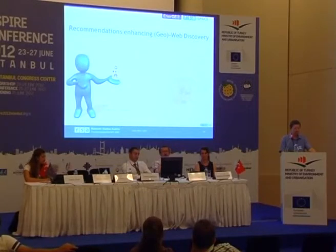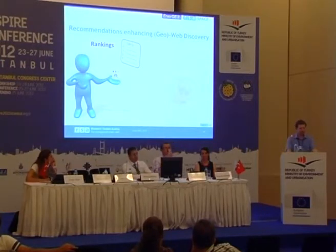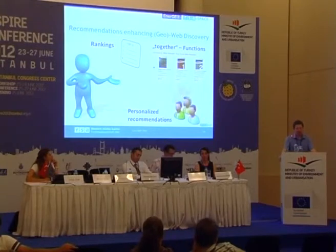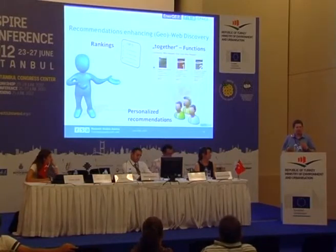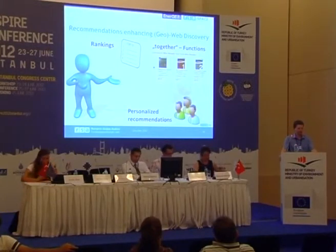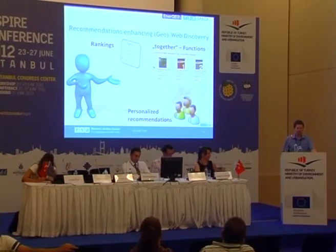What you can do with recommendations includes, first, integrating rankings — lists with a top 10 of most-viewed items. Then you have the 'together' functions I already presented. And finally, quite useful, is personalized recommendations — which is simply the same as asking a friend. Your best friend knows what you like. If you prefer a certain book genre, this is really the same as asking a friend for a recommendation, and this system is the automatic equivalent of that.